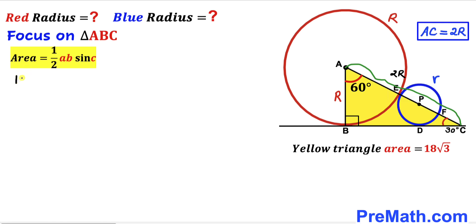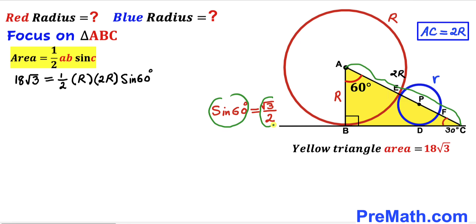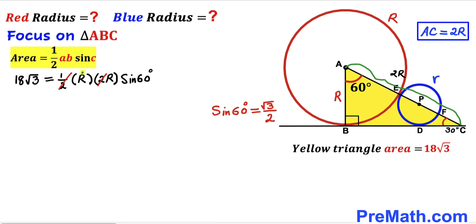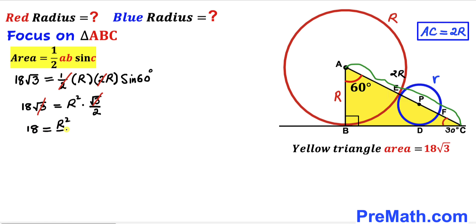Filling in the formula: 18√3 = ½ · R · 2R · sin(60°). Since sin(60°) = √3/2, substituting gives 18√3 = ½ · R · 2R · (√3/2). The 2 and ½ cancel each other out, and R · R gives R². The √3 terms cancel each other out, leaving 18 = R²/2.